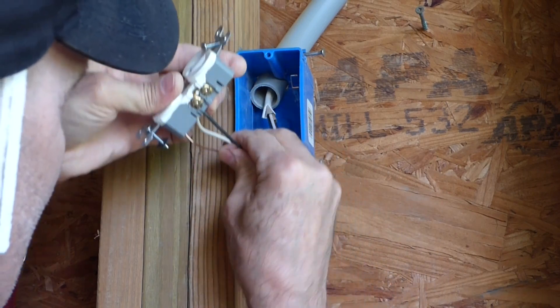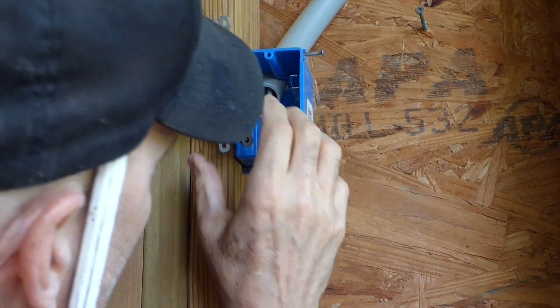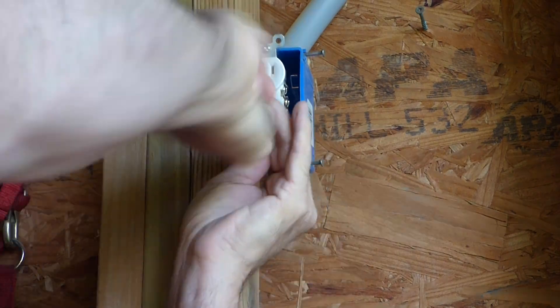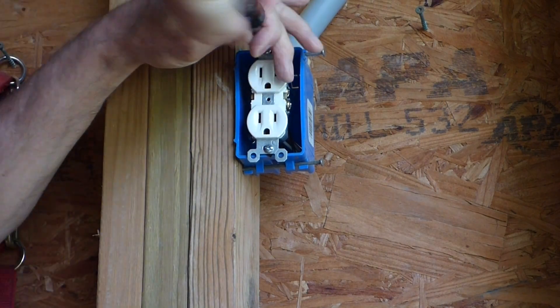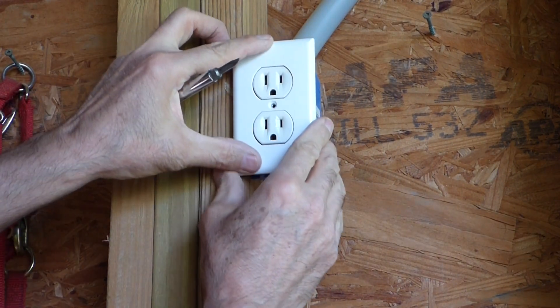We'll just take our wires, fold them in out of the way in the box. Now all we have left, throw the cover plate on.